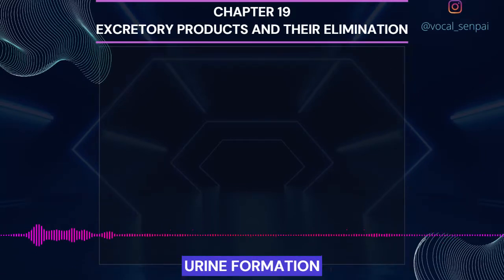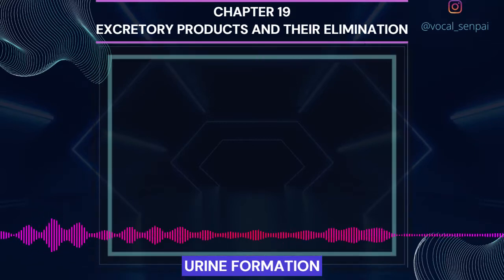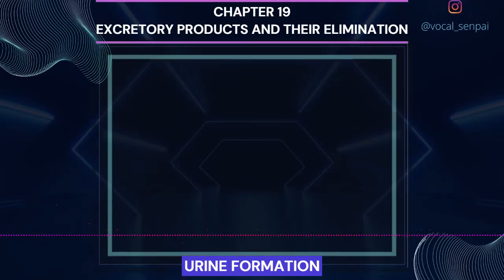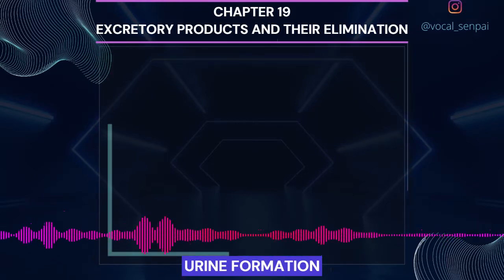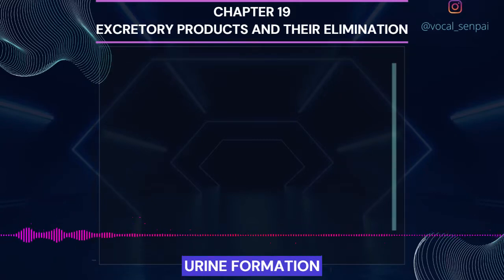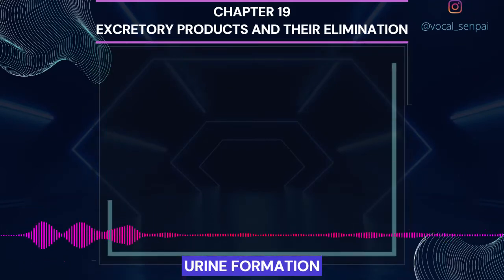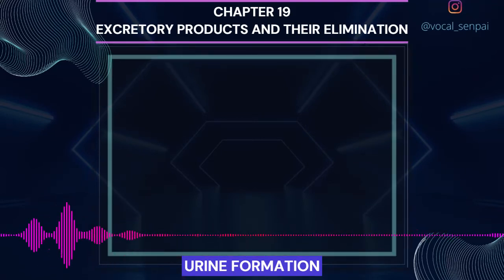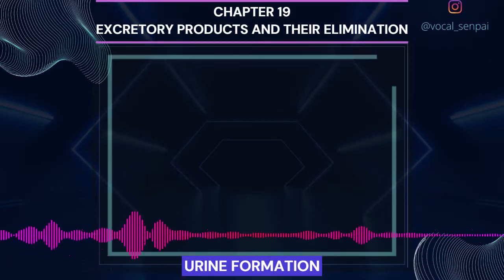A comparison of the volume of filtrate formed per day, 180 litres per day, with that of the urine released, 1.5 litres, suggests that nearly 99% of the filtrate has to be reabsorbed by the renal tubules. This process is called reabsorption. The tubular epithelial cells in different segments of the nephron perform this either by active or passive mechanisms. For example, substances like glucose, amino acids, Na+, etc. in the filtrate are reabsorbed actively, whereas nitrogenous wastes are absorbed by passive transport. Reabsorption of water also occurs passively in the initial segments of the nephron (figure 19.5). During urine formation, the tubular cells also secrete substances like H+, K+, and ammonia into the filtrate. Tubular secretion is also an important step in urine formation as it helps in the maintenance of ionic and acid-base balance of body fluids.